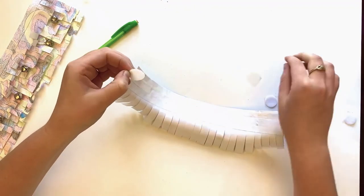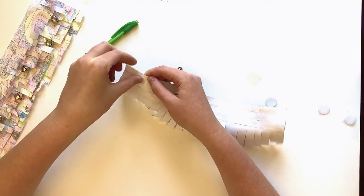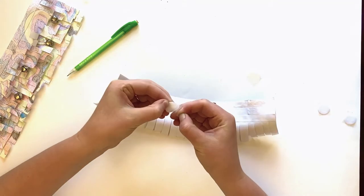Unpeel the back of the Velcro dot and attach one on the inside of the cuff and one on the outside. Repeat the same steps for the other cuff to complete this Studio Saturday project.